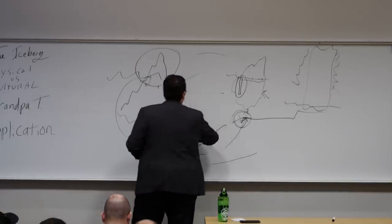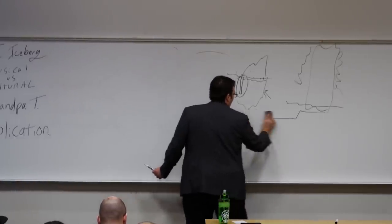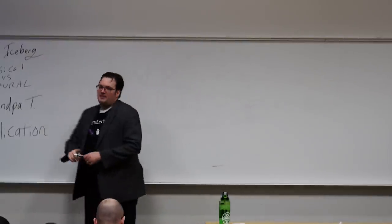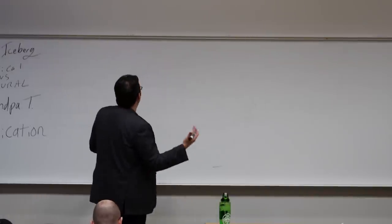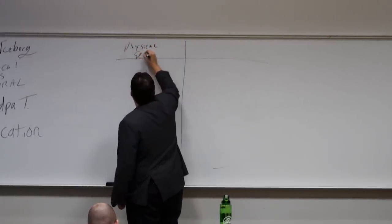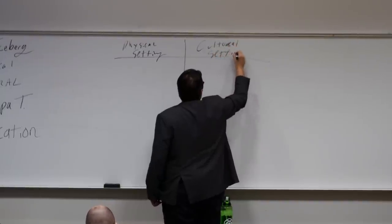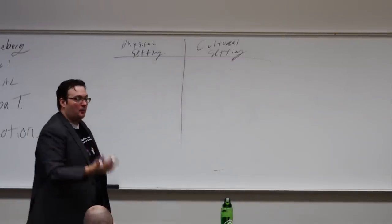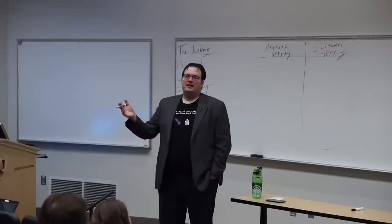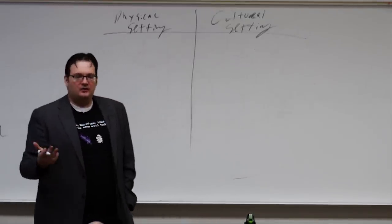When I approach world building, one of the main things I do is split in my head between two different types: physical setting and cultural setting. We're not going to talk about magic systems today — we'll do that during the next one, that's a big topic. The physical setting is all the world building stuff that would exist even if the humans weren't there.